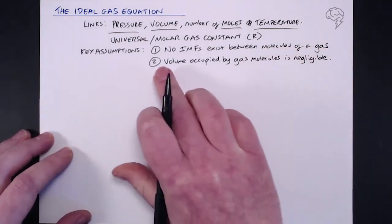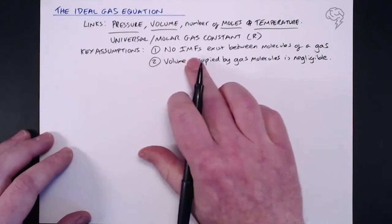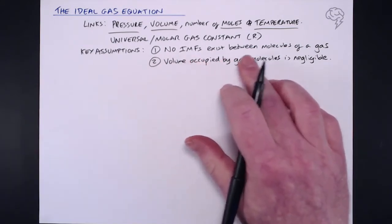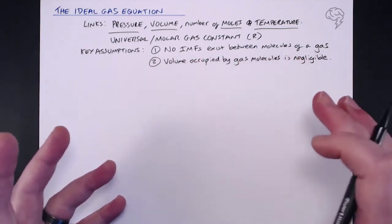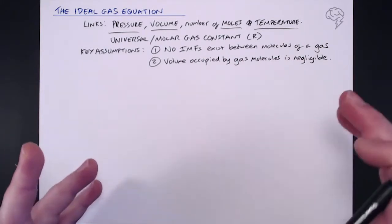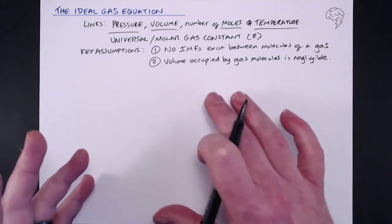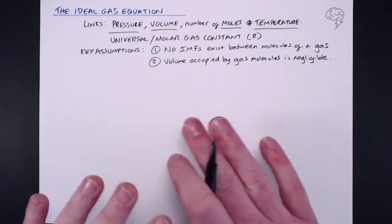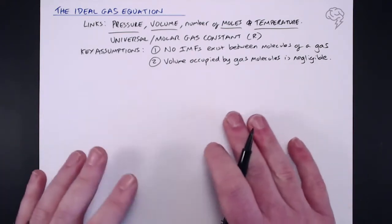So the key assumptions are that number one, no intermolecular forces exist between molecules of a gas. Well, we know this to not be true. There's hydrogen bonding, dipole forces, van der Waals or London forces. But what this ideal gas equation does is assumes that they don't exist for purposes of this equation.